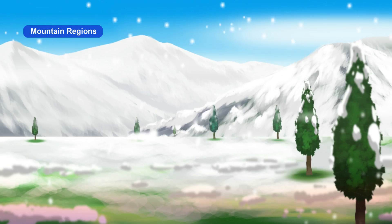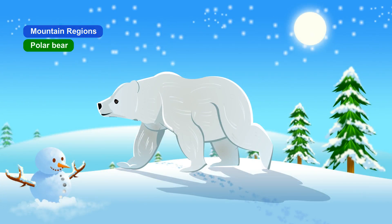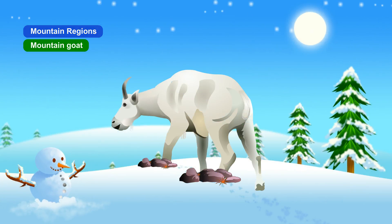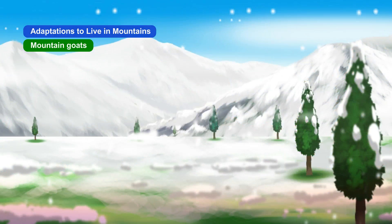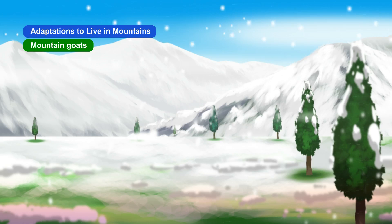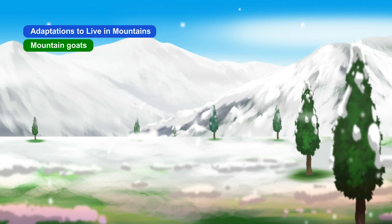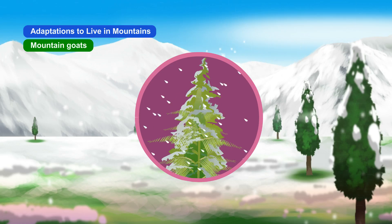Mountain regions are usually cold, windy and snowy. Animals like polar bear, penguin, yak, seal, mountain goat and sheep are found in the mountain ranges. Plants in mountains grow close to the ground to protect them from strong winds that can uproot the plants. Some plants are adapted to grow on snow. Trees are cone-shaped and leaves are needle-like to ensure that snow and rainwater slides down easily.